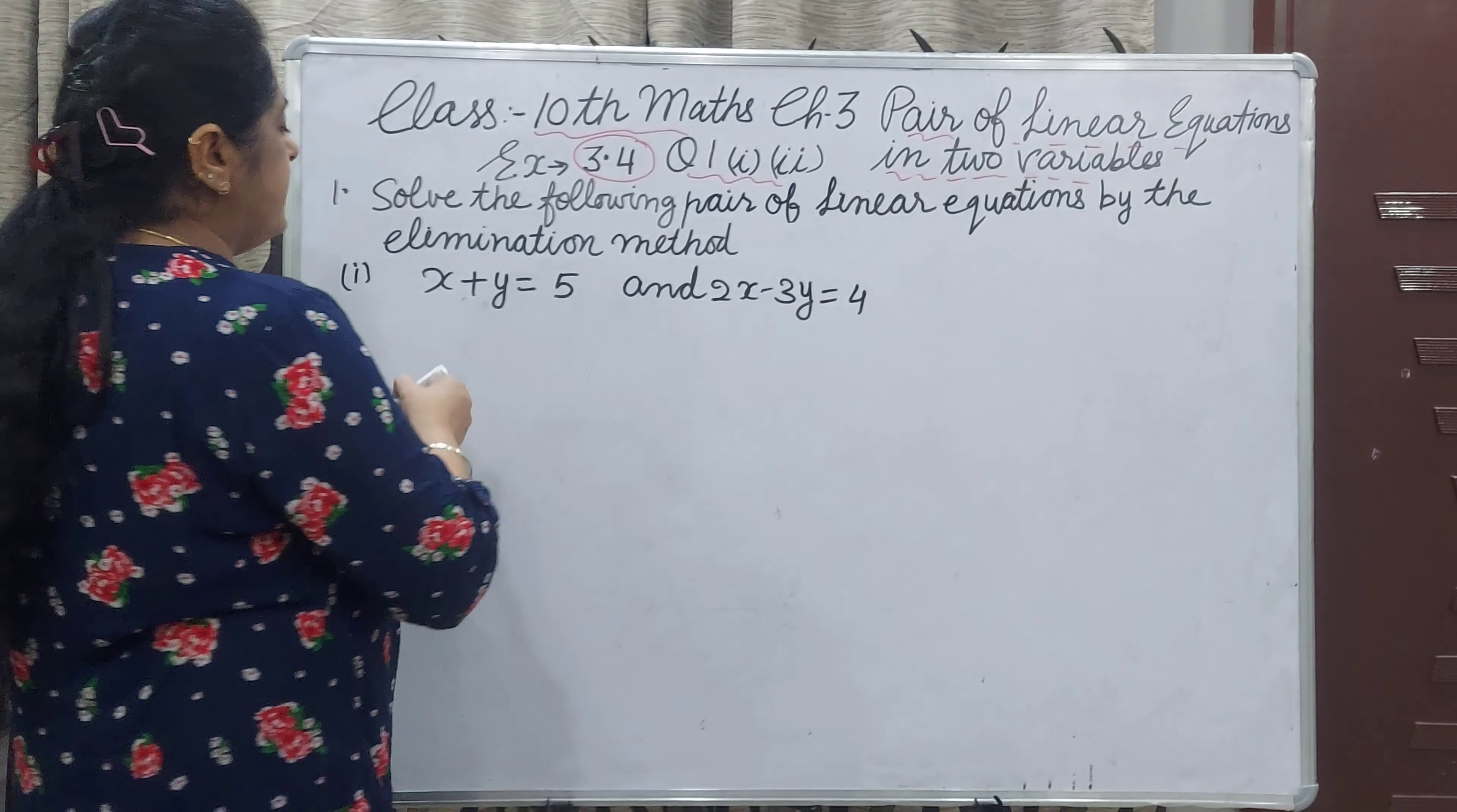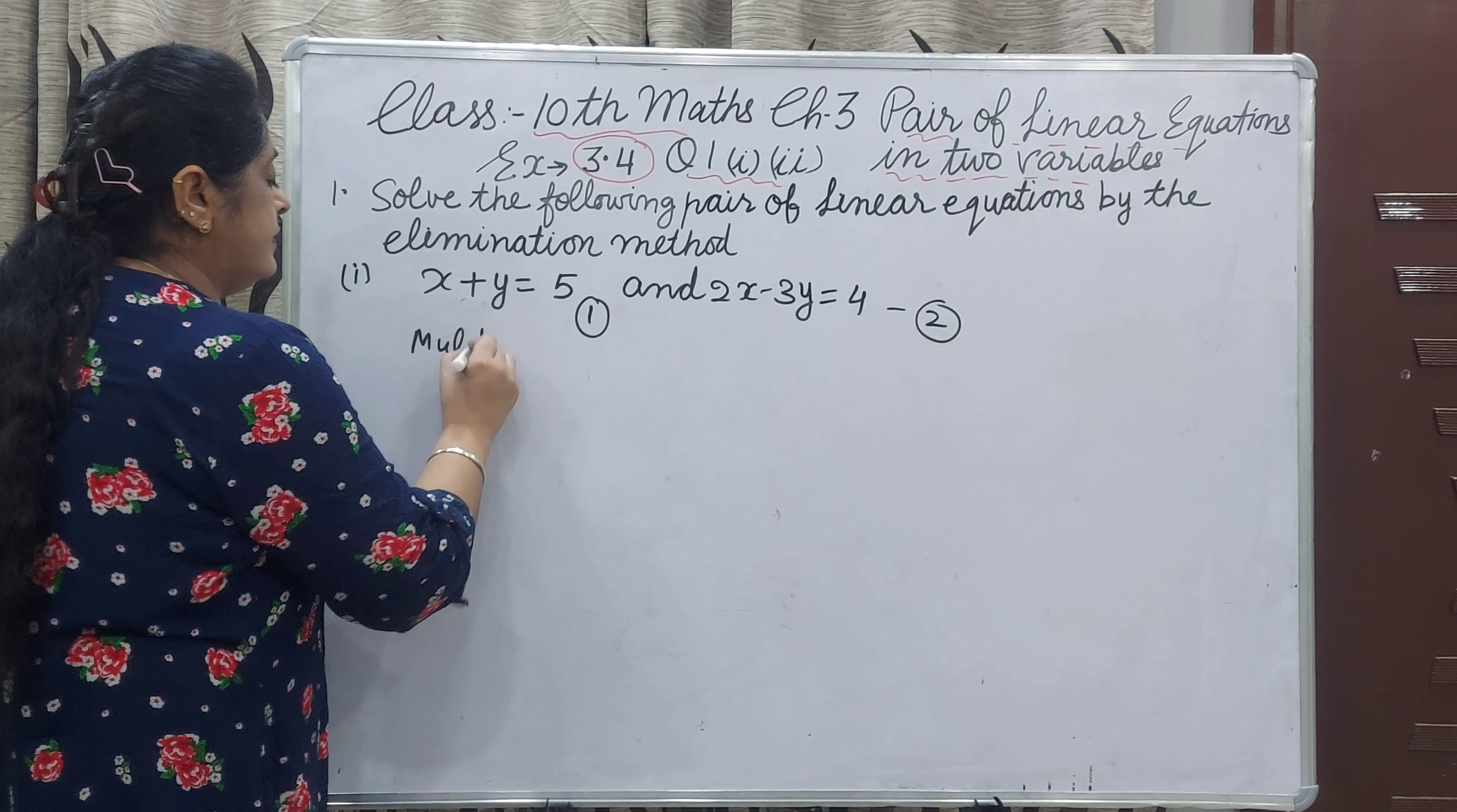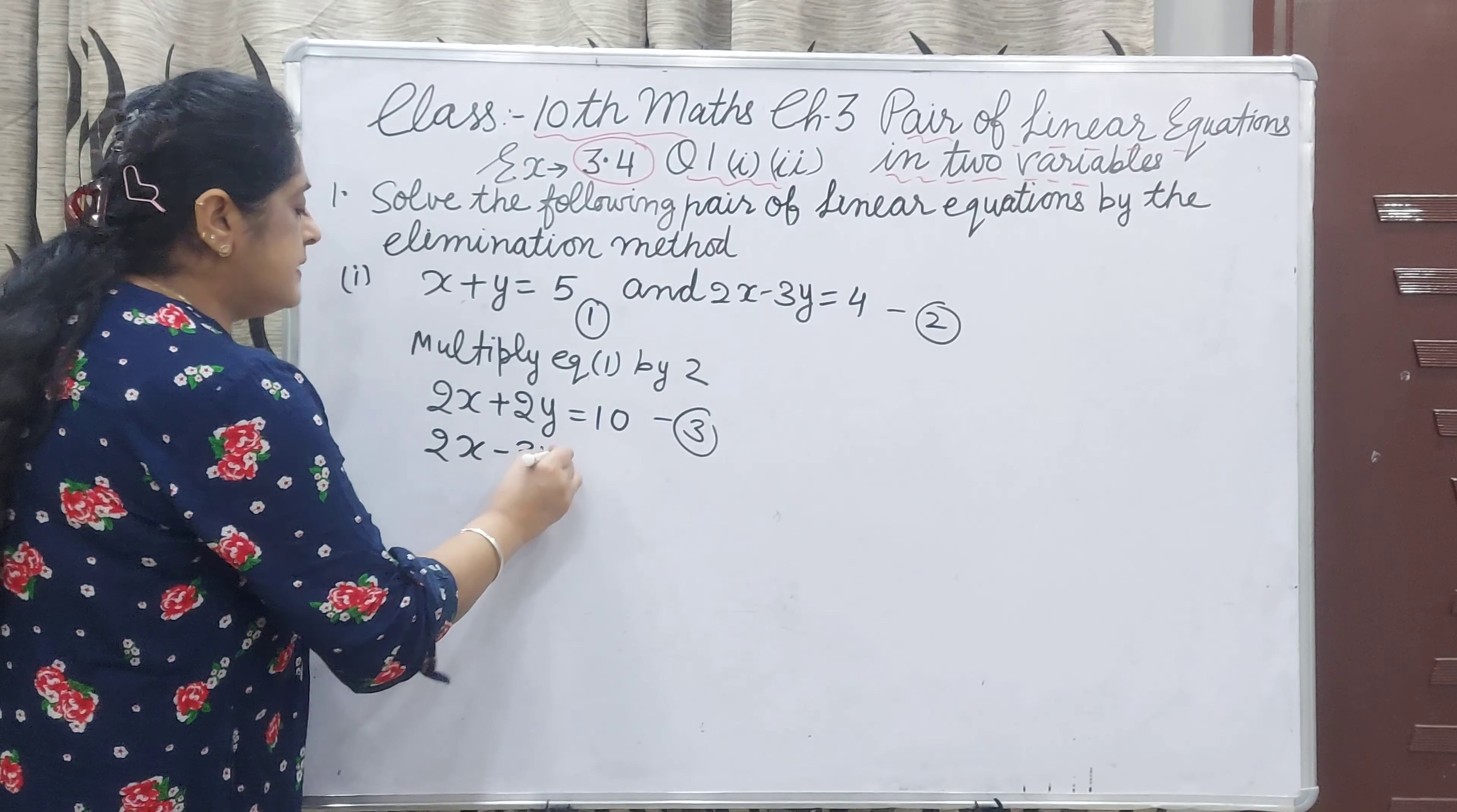First equation is x plus y equal to 5. This is equation 1 and this is equation 2. Now check: x is 1 here and x is 2 here. If we multiply equation number 1 by 2, there will be 2x. Multiply equation 1 by 2: it will be 2x plus 2y equal to 10. This is equation number 3. Now write equation number 2: 2x minus 3y equal to 4.